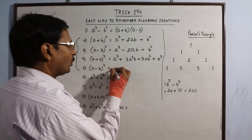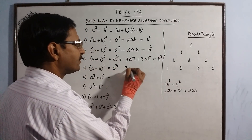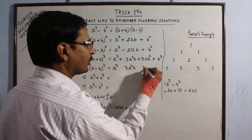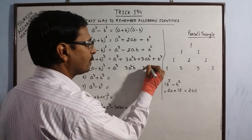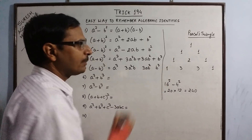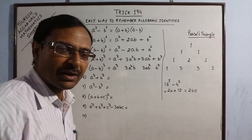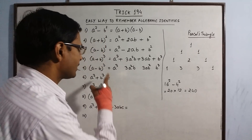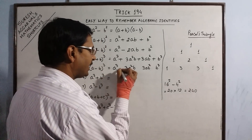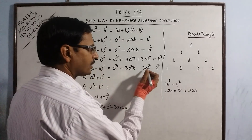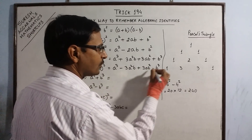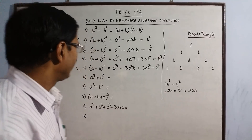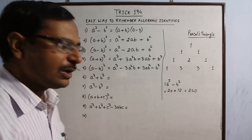For A minus B whole cube we use the same method as A plus B whole cube. The only difference is we use alternate positive and negative signs: the first term will be positive, second will be negative, third will be positive, and fourth will be negative. That gives us the identity of A minus B whole cube.